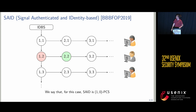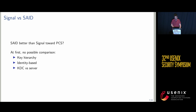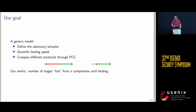Let's look at another protocol, SAID, which is a variant of Signal in the identity-based setting. For SAID, if only one stage is compromised, we say it has 1-0 PCS security. Can we say SAID is better than Signal for PCS? At first we cannot, because those two protocols are not the same — the key hierarchy is different. SAID is identity-based with a KDC versus a server for Signal. So our goal is to build a generic model to compare protocols with the PCS metric and to see what the key components of good PCS are.